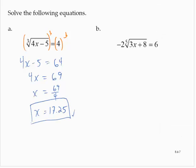Exercise b: negative 2 times the fifth root of 3x plus 8 is equal to 6. Let's isolate the radical first by dividing through by negative 2. The fifth root of 3x plus 8 is equal to negative 3.